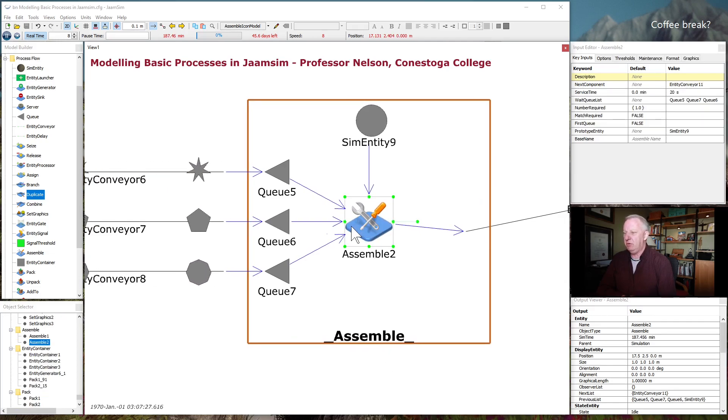Another common processing element that you might want in your model is an assembly operation. So this one's fairly straightforward. It will take any number of queues or items from any number of queues and put them together and create an assembly. So this is where you define a wait queue list. So I've defined queue 5, 7, and 6. A little bit out of order here, but these three queues. I've told it it'll take 20 seconds to do the assembly.